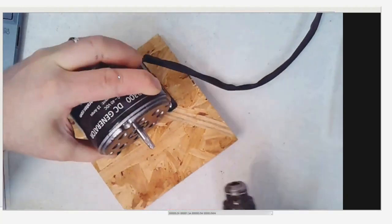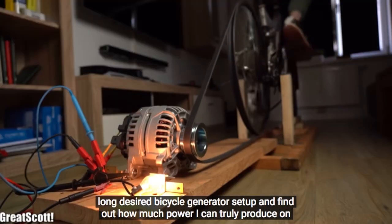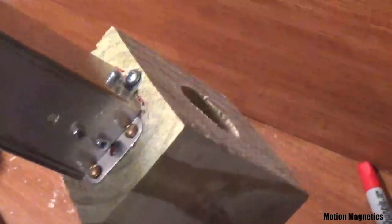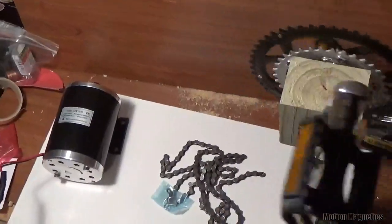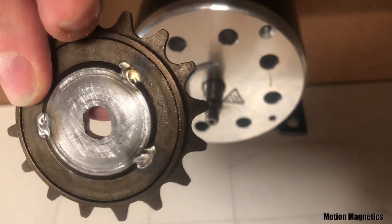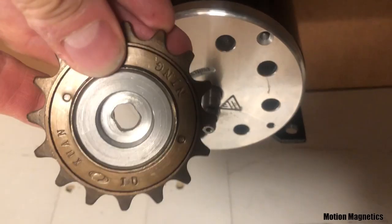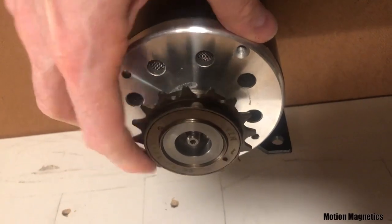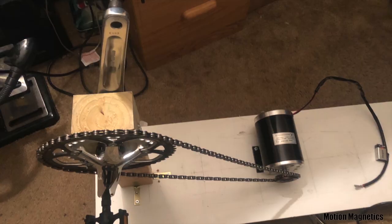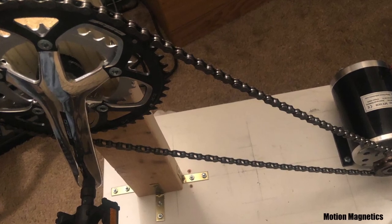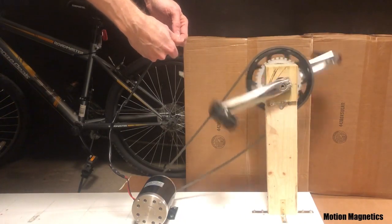What most people do when they build one of these is use a motor as a generator or an alternator from an automobile. It was my initial thought to do so as well. But if you look at what I started with, this motor was rated 48 volts at 3,000 RPM, and that could give you about 1,000 watts of power. So to reach full power if you use the motor as a generator, you'd need to reach 3,000 rotations a minute.